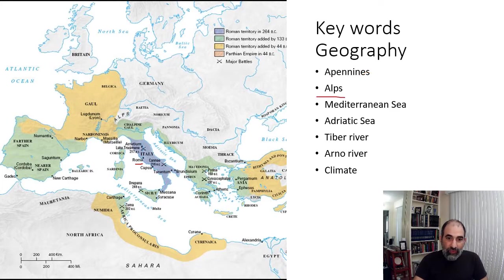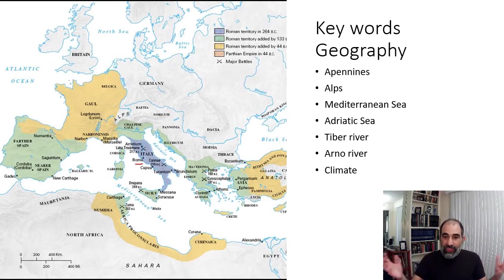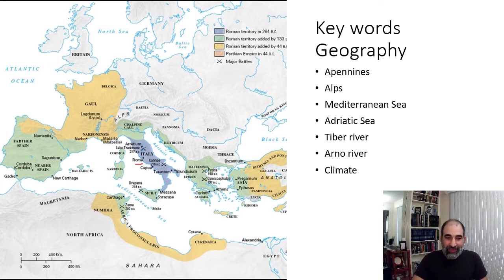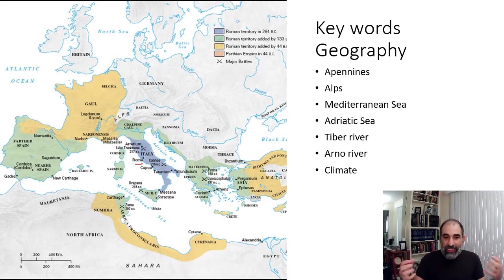The Alps are located just north of Italy. The Apennines run along more the eastern side of Italy. Why are mountains important? Mountains provide protection — it's very hard to cross mountains. Almost no one is even going to try to cross the Alps, but eventually somebody will, and that's going to make for one heck of a story in a future lecture. For the most part, those mountains provide a lot of protection — a lot of what keeps you from being invaded very easily.